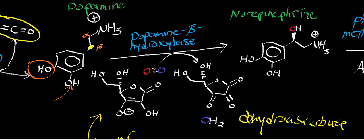Ascorbate is used in the mechanism to hydroxylate, and you end up losing water and dehydroascorbate — dehydroascorbate being the oxidized version of ascorbate. This gives you norepinephrine, sometimes referred to as noradrenaline.